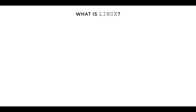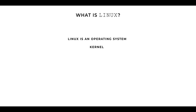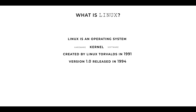To start off this Linux crash course, let's define what Linux is. For most of you, Linux is an operating system — it is a kernel which sits between the hardware and the software. It was created by Linus Torvalds in 1991, and version 1.0 was released in 1994. Linux is known as FOSS, or Free Open Source Software.